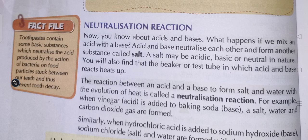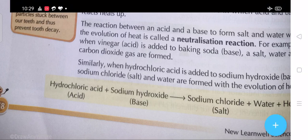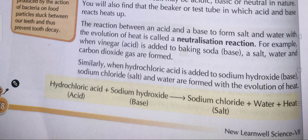For example, when vinegar (acid) is added to baking soda (base), salt, water, and carbon dioxide gas are formed. Similarly, when hydrochloric acid is added to sodium hydroxide (base), sodium chloride (salt) and water are formed with the evolution of heat. So here, a neutralization process takes place - hydrochloric acid and sodium hydroxide react with each other and form salt, water, and heat is generated.